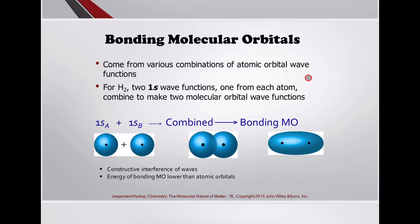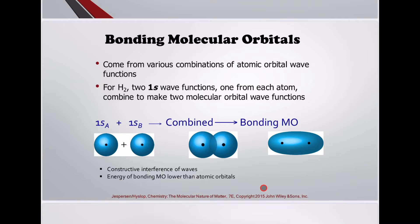Bonding molecular orbitals come from various combinations of atomic orbital wave functions. For H₂, two 1s wave functions — one from each atom — combine to make two molecular orbital wave functions. One 1s and another 1s combine to form the bonding molecular orbital through constructive interference, which lowers the energy of the bonding molecular orbital below that of the atomic orbitals.